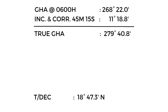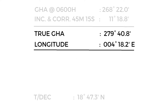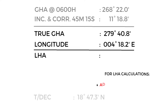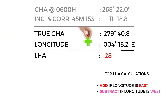Now that we have our true GHA, let's apply our longitude to find our LHA. Remember this rule for LHA calculations: if our longitude is east, we must add it to our GHA; subtract if the longitude is west.